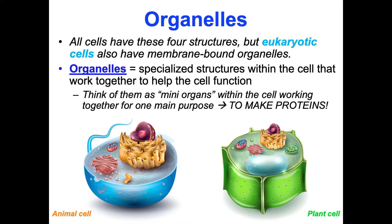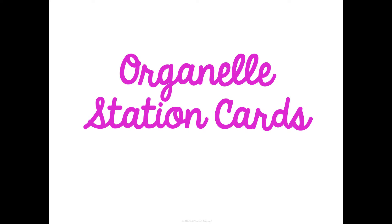We have pictures of an animal cell and a plant cell. As we go through these organelles, we'll focus on identifying where they are and what they look like in animal and plant cells. Remember, fungi and protists are also eukaryotes, so they will have many of these structures too. In class, we're going to go through these organelles as stations rather than just sitting through notes for hours.